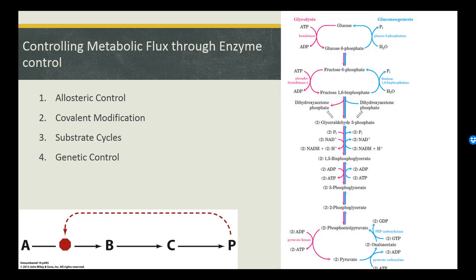We can control these enzymes in a number of ways: through inhibitors or activators using allosteric control; through covalent modification such as requiring phosphorylation prior to activation or deactivation; through substrate cycles such as feedback inhibition or feedforward activation; and through genetic control — whether the enzyme is actually expressed or not. You can think of these steps as traffic lights for the pathway, ensuring that traffic is only flowing in one direction and that we don't end up in a futile substrate cycle.